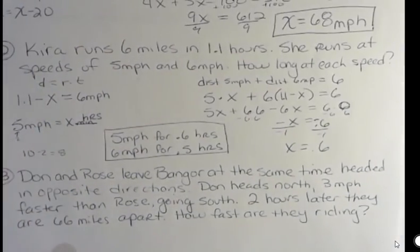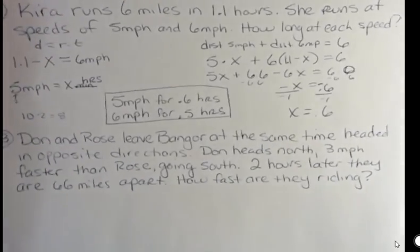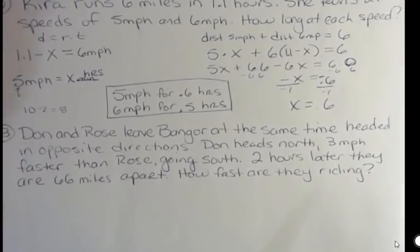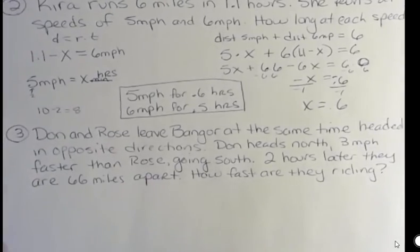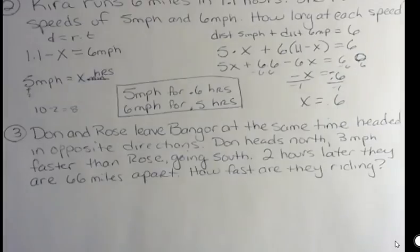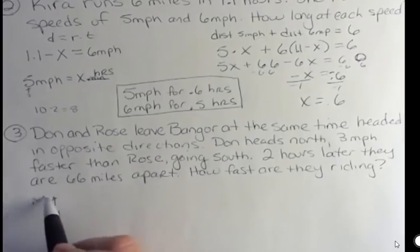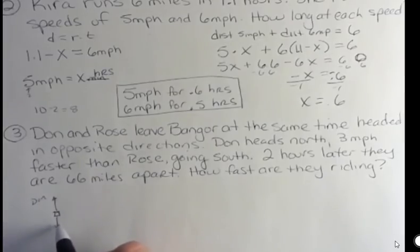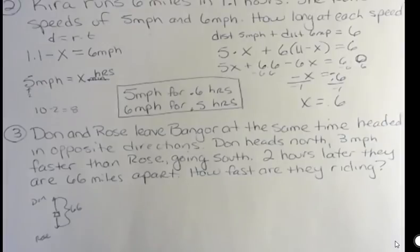Third one. Don and Rose leave Bangor at the same time headed in opposite directions. I didn't say in this they're riding on a bicycle, but they are. Don heads north at 3 miles per hour faster than Rose, who's going south. Two hours later, they are 66 miles apart. How fast are they both riding? Can you see this picture? They're starting off here and Don's going north and Rose is going south. And after two hours, their total distance is 66 miles.